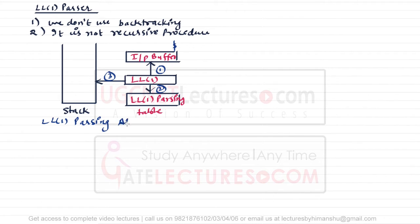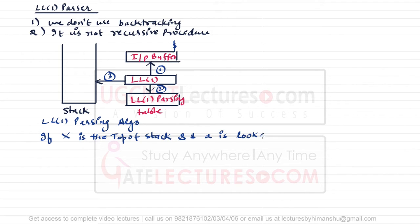The LL1 parsing algorithm works as follows. If X is the top of the stack and 'a' is the lookahead symbol — meaning X is the variable at the top of the stack and 'a' is the symbol currently seen in the input buffer — then we consider the following steps.